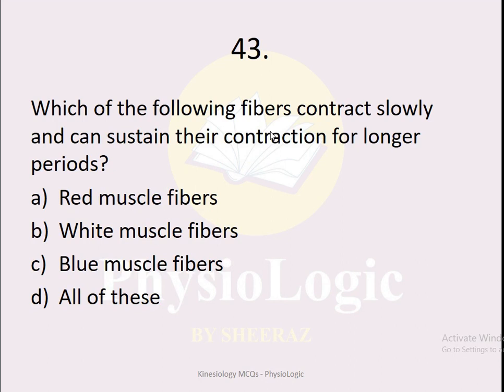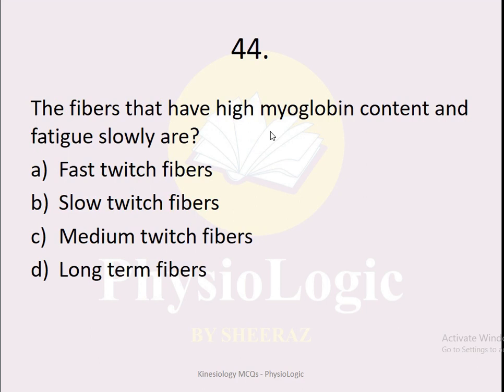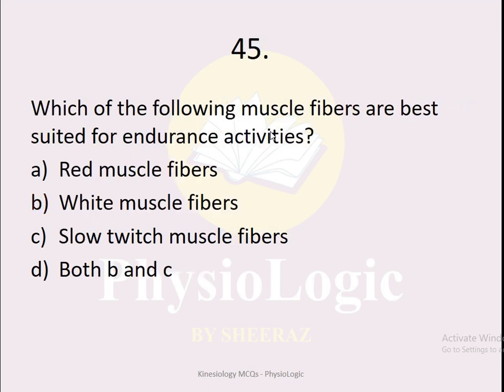MCQ number 43: Which of the following fibers contract slowly and can sustain their contraction for longer periods of time? Option A red muscle fibers, option B white muscle fibers, option C blue muscle fibers, option D all of these. The correct option is red muscle fibers — they are slow twitch muscle fibers that sustain contraction for longer periods. MCQ number 44: The fibers that have high myoglobin content and fatigue slowly are — the correct option is option B, slow twitch muscle fibers, which are red fibers with high myoglobin content that fatigue slowly.